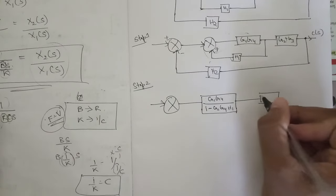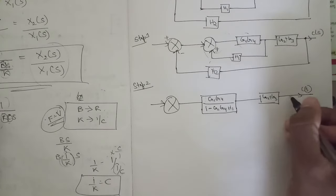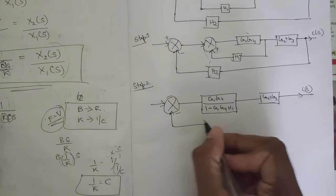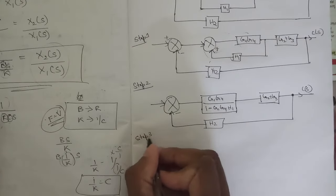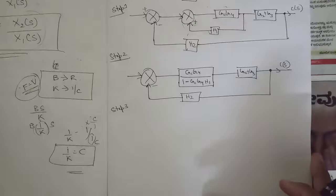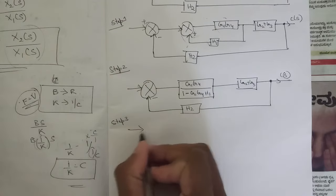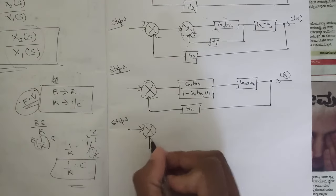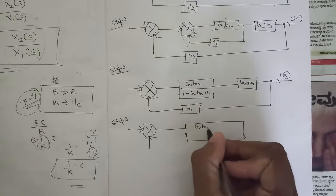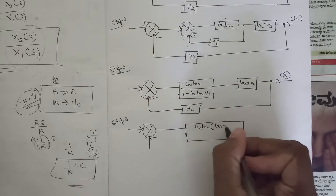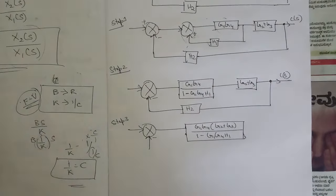We also still have block H2. Step three: the two remaining blocks are in series again, so we multiply them and keep the summing point as it is, reducing to a single block: G1G4 times (G2 plus G3), all divided by 1 minus G1G4·H1.